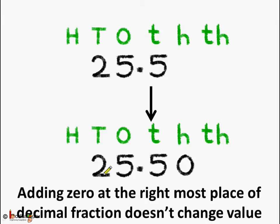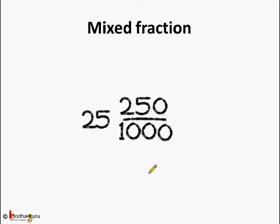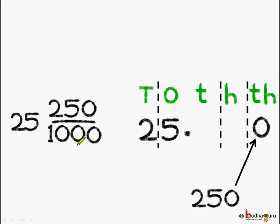Now, let's change a mixed fraction 25 and 250 upon 1000 to a decimal number. As we see in the fractional part, it extends to the thousands place. So, we will also extend our decimal number to thousands place. Now, starting from the lowest digit, 0 goes to the thousands place. Next, 5 goes to the hundredth place.